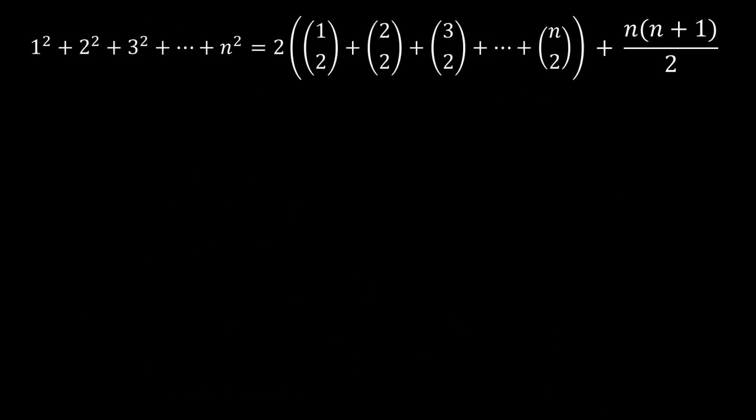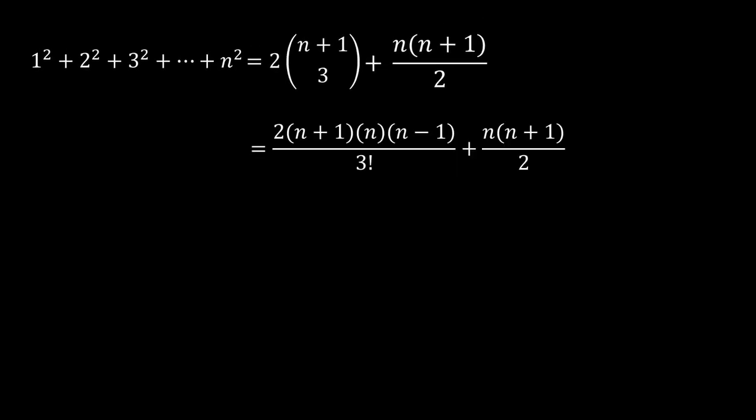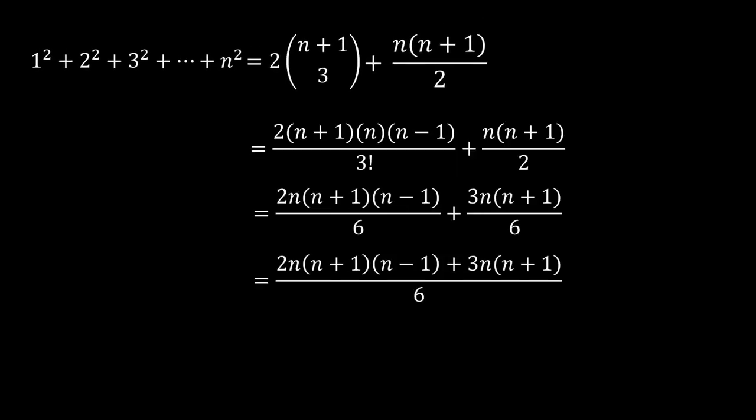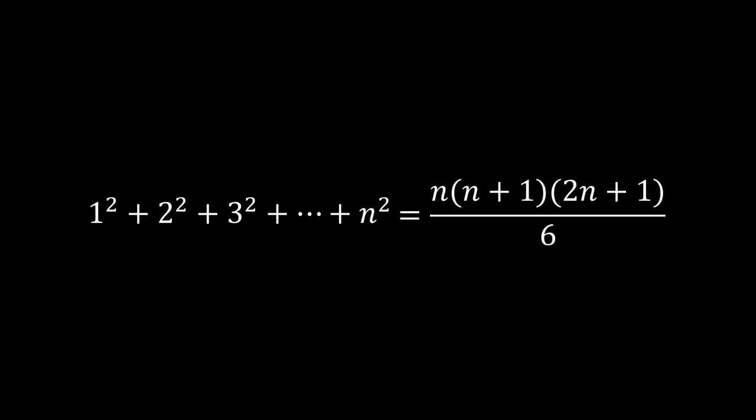Returning to our original problem of finding the sum of n squares, we can substitute n plus 1 choose 3 instead of that long summation. And there it is, a proof for the sum of n squares using combinations.